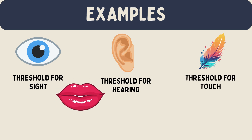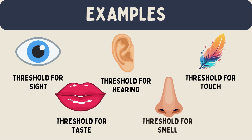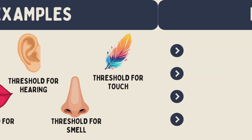Taste: Imagine tasting different concentrations of sugar water. The first time you can taste the sweetness, that is your absolute threshold for taste. Smell: Think about a flower's scent — if someone brings the flower closer to your nose, there will be a point where you first detect the smell. That point is your absolute threshold for smell.